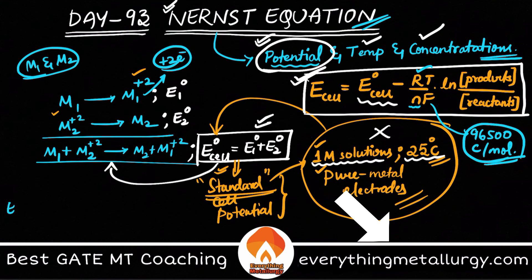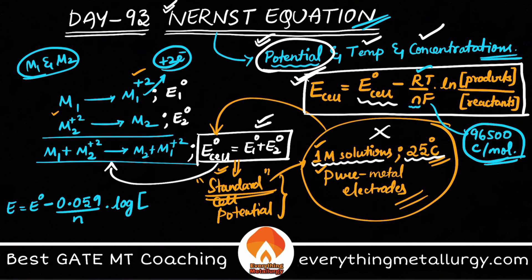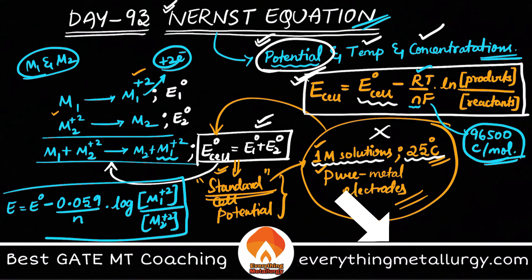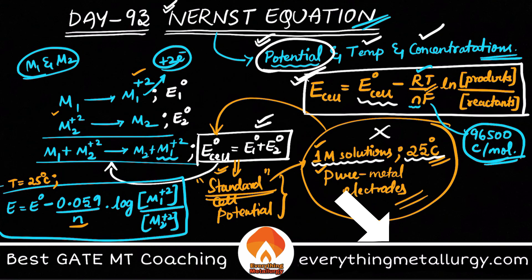We can also get a clearer equation by substituting the constants and converting the natural logarithm to log base 10. What we get is: E = E° − (0.059 / n) × log([products]/[reactants]). Here the product is M1²⁺ ion concentration and the reactant is M2²⁺. This works at 25°C (298 K), with R = 8.314 and F = 96,500.